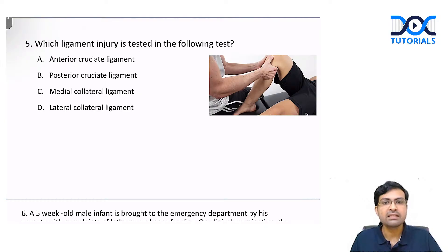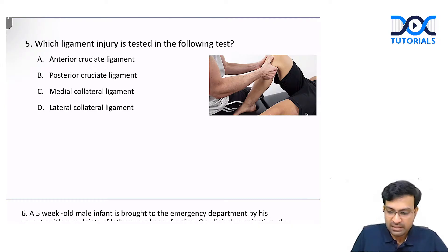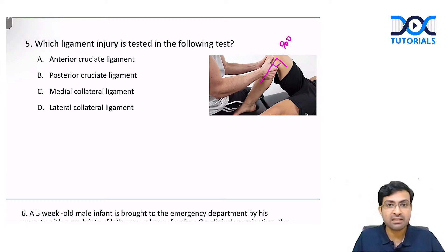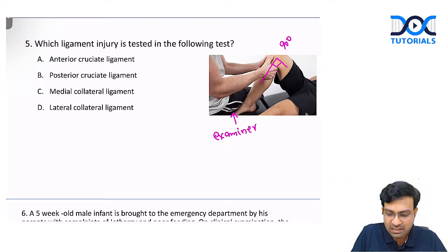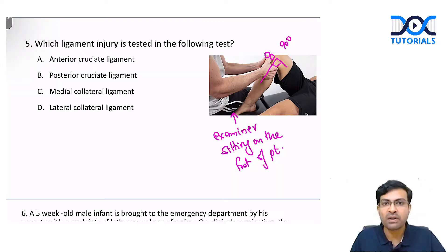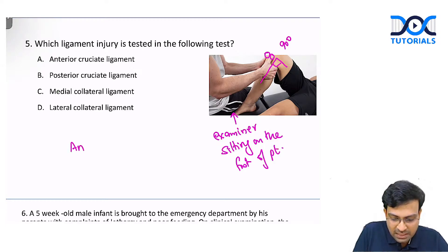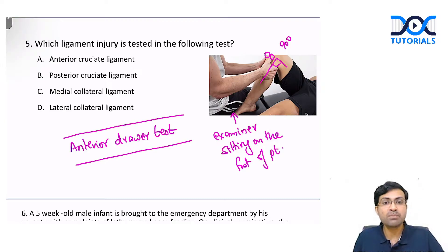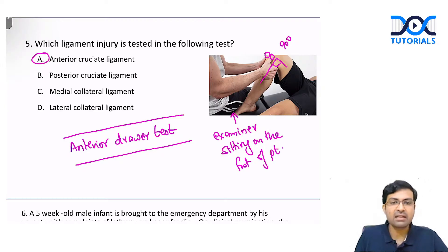Next question: which ligament injury is tested in the following test? In the image, the knee is flexed to 90 degrees, the examiner is sitting on the foot of the patient to stabilize the limb, and the examiner pulls the tibia forwards to check for subluxation. This is the anterior drawer test, which is the most important test for injury to the anterior cruciate ligament.